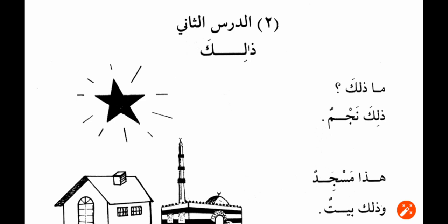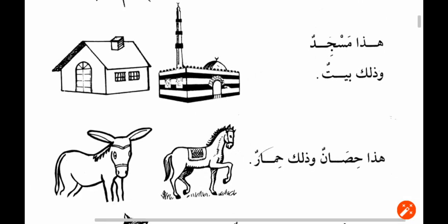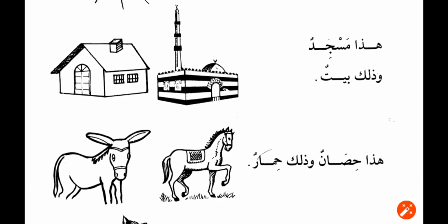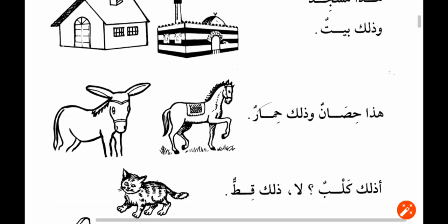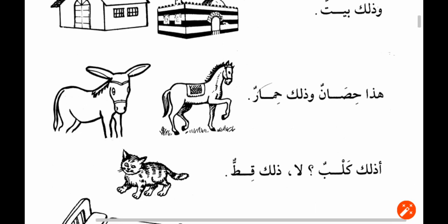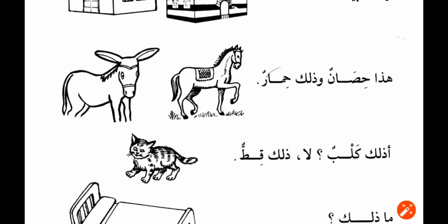Ma dalika? What is that? Dalika najmun — that is a star. Ahada masjidun, fa dalika baitun — this is a masjid and that is a house. Ahada isanun, fa dalika himarun — this is a horse and that is a donkey.